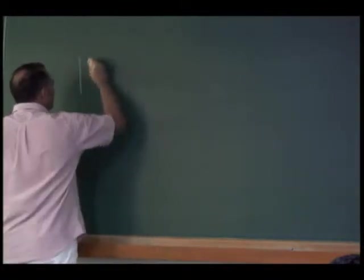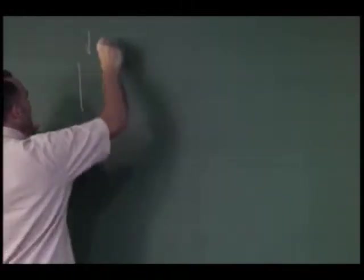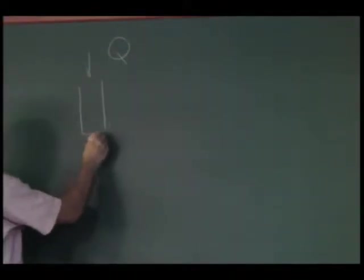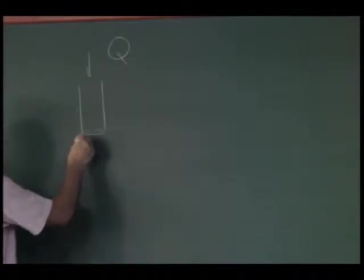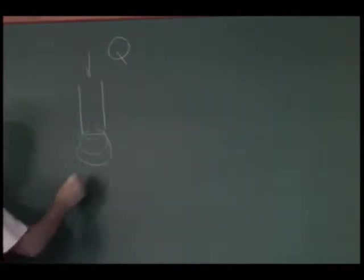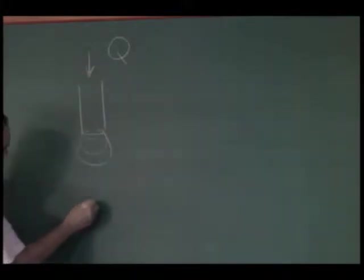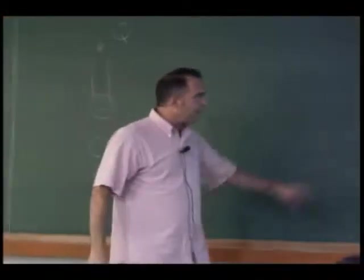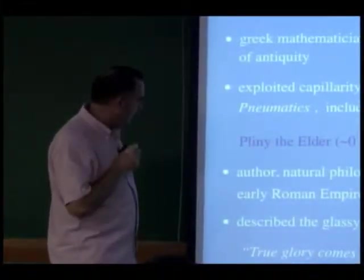Imagine you have a continuous flow of fluid and you want to make it discrete — you want something which counts seconds. You can do that with surface tension. If you have a continuous flux of water coming out of a tube, it will grow until reaching some critical volume, then pinch off and release a drop. So despite continuous flow, you get discrete drops. This was the basis for the first clocks developed by Hero.